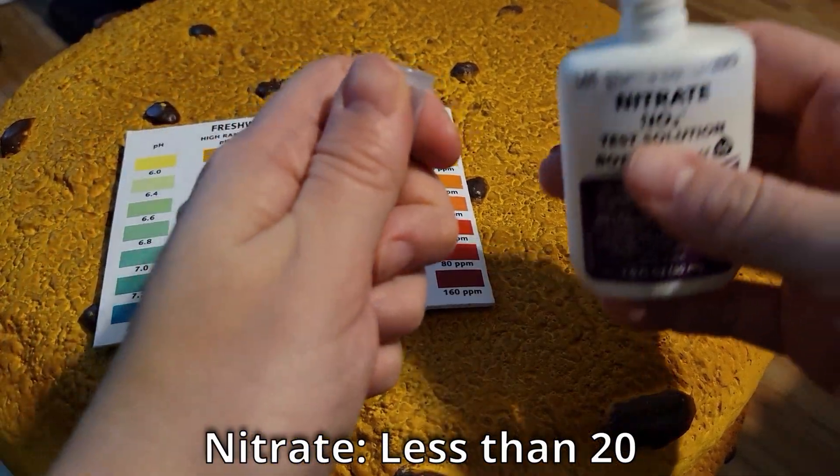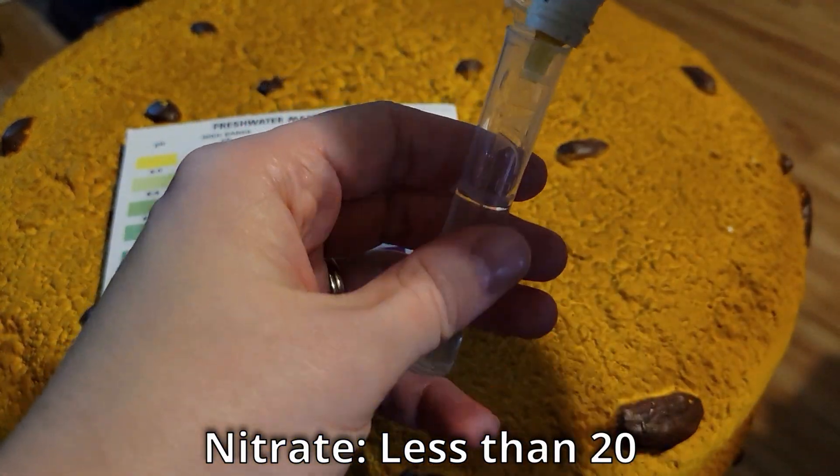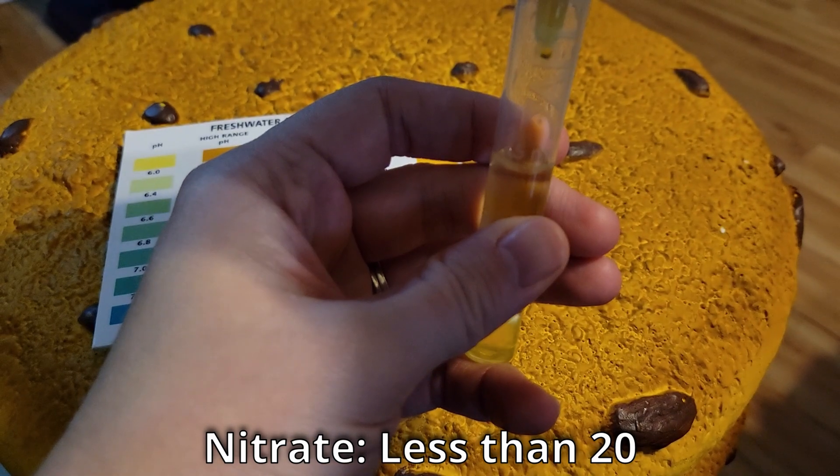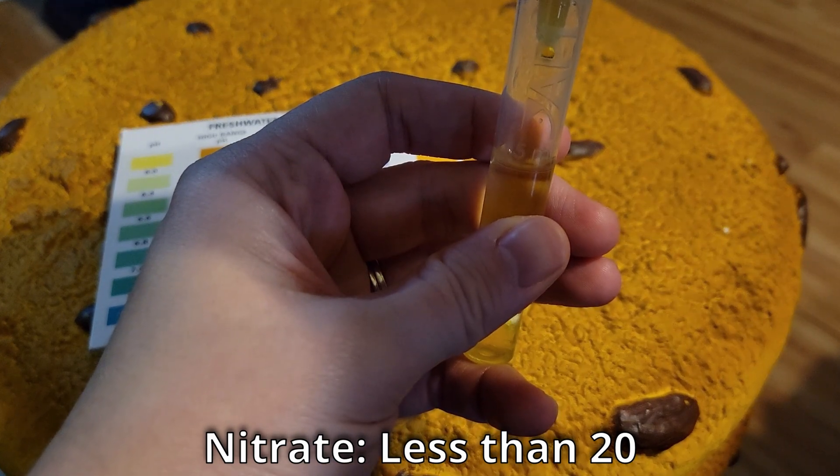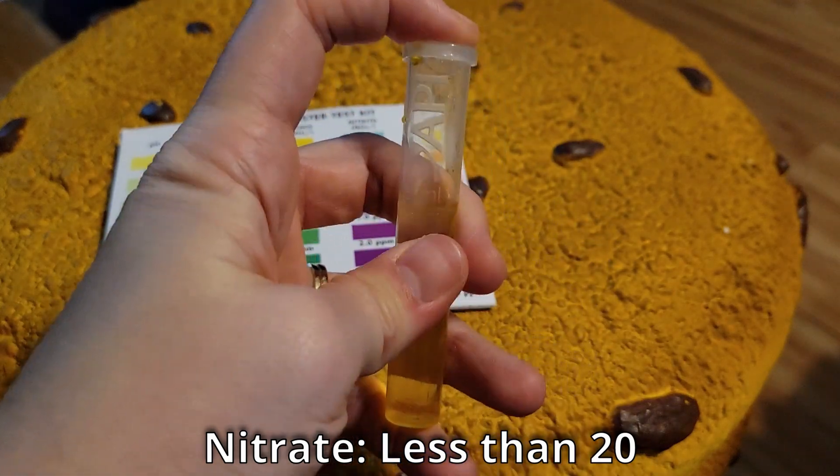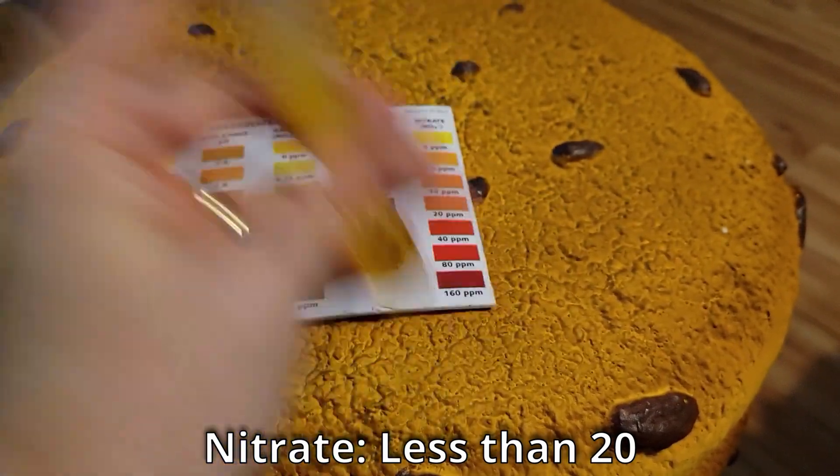And finally, we have the nitrate test. This is the test that a lot of people can tend to mess up quite easily because the instructions need to be followed precisely. You are going to begin with bottle one and add 10 drops and shake it up.